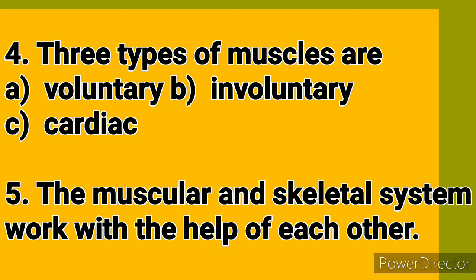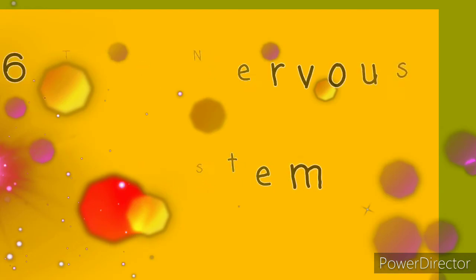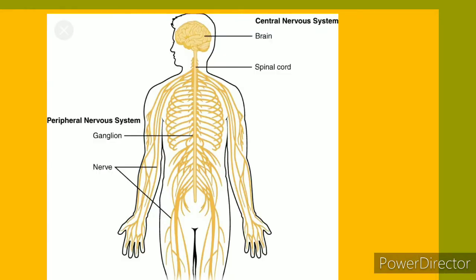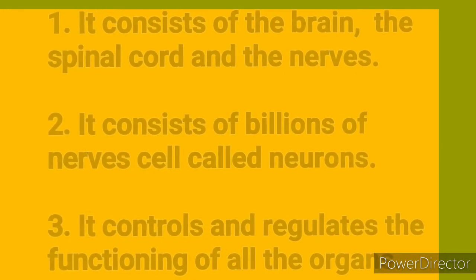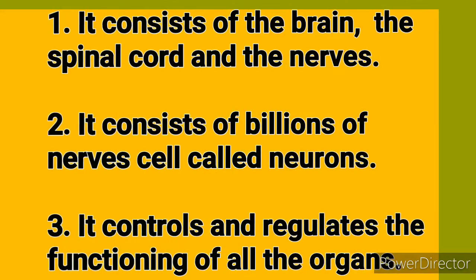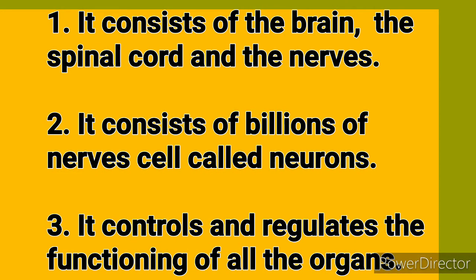Now we are going to learn about the sixth system: the nervous system. The nervous system consists of the brain, the spinal cord, and the nerves. It consists of millions of nerve cells called neurons. The nervous system controls and regulates the functioning of all the organs in our body.